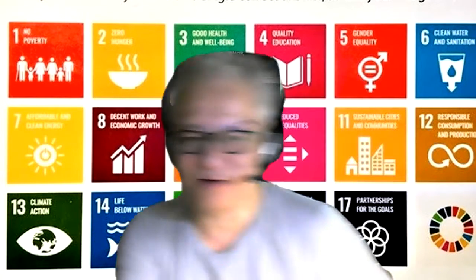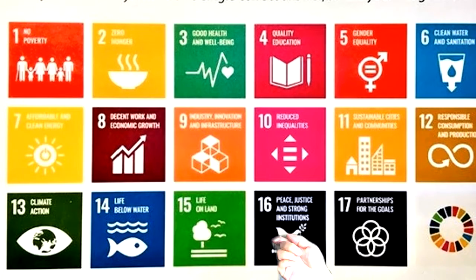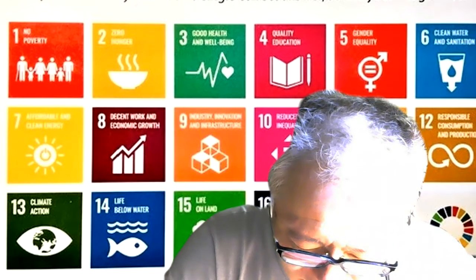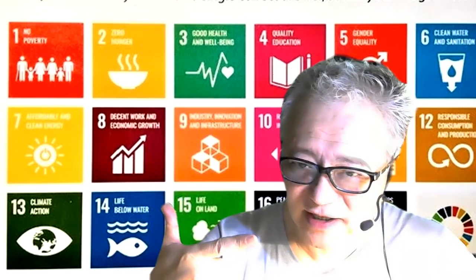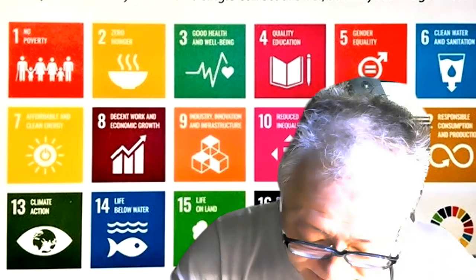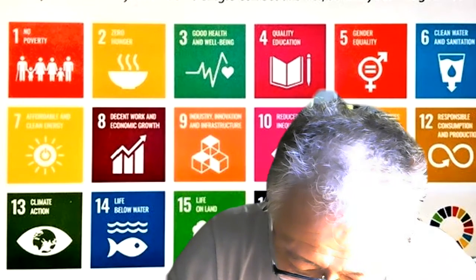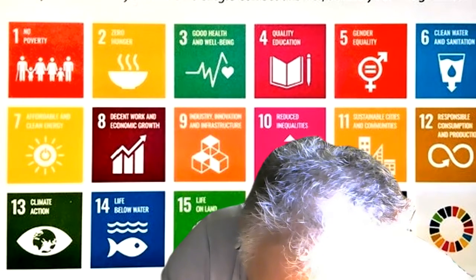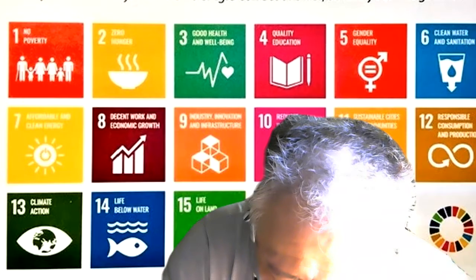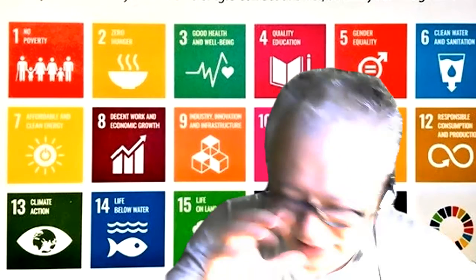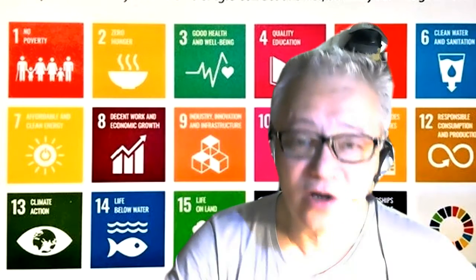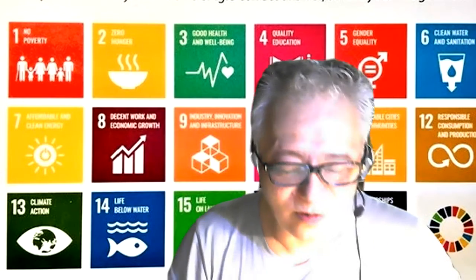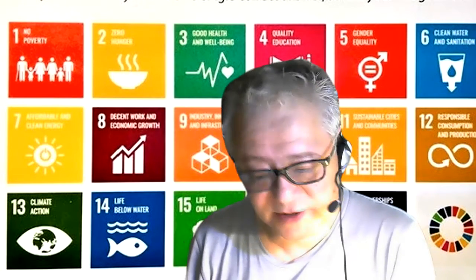Number sixteen — it looks like a bird — Peace, Justice, and Strong Institutions. Number seventeen — this one looks like flowers or a collection of some sort — Partnerships for the Goals. So these are the 17 goals called Sustainable Development Goals.